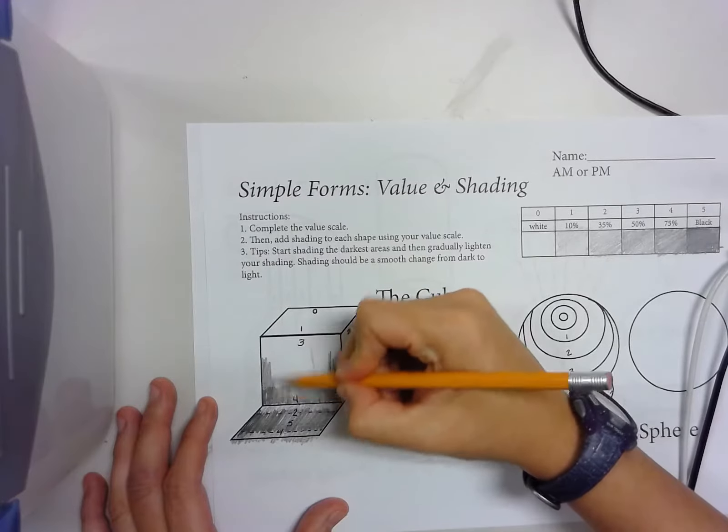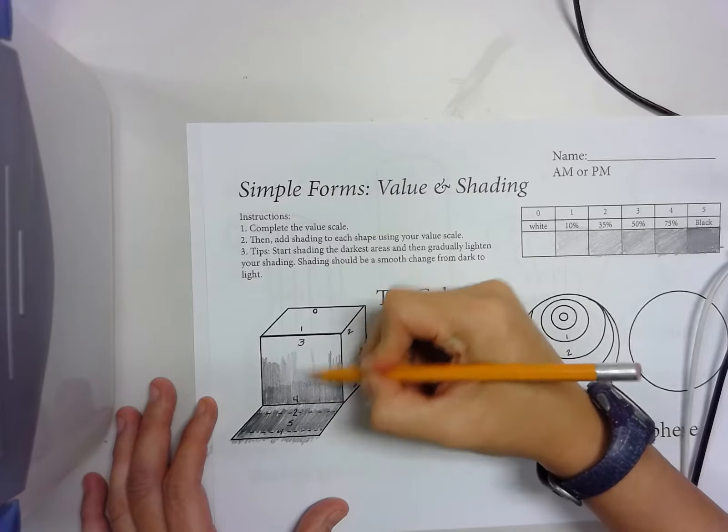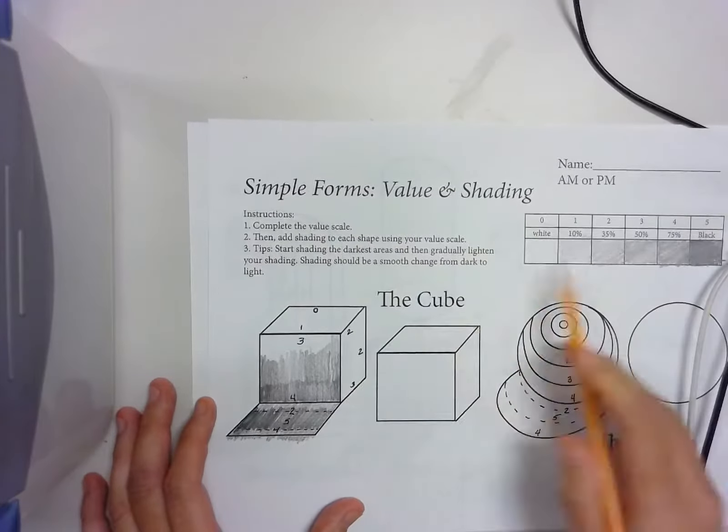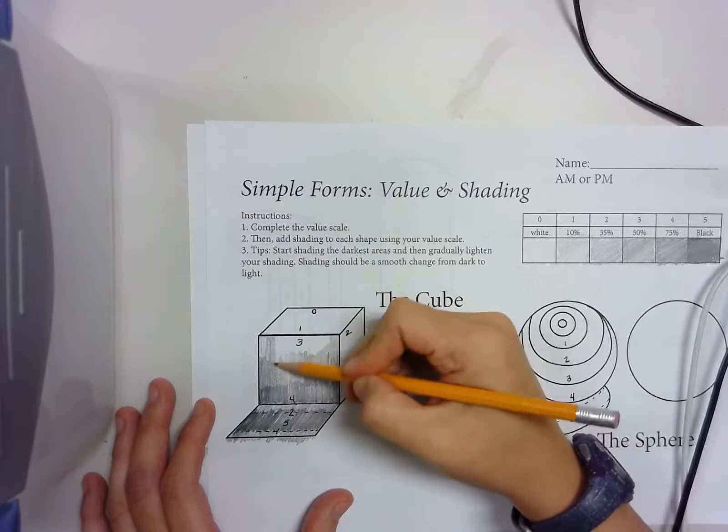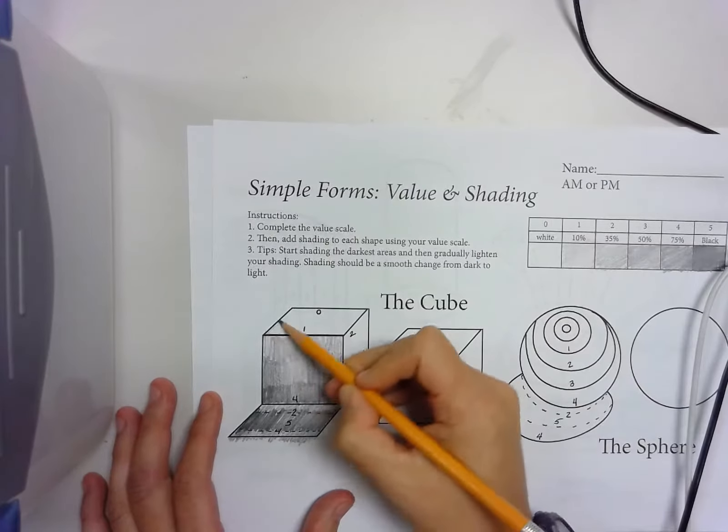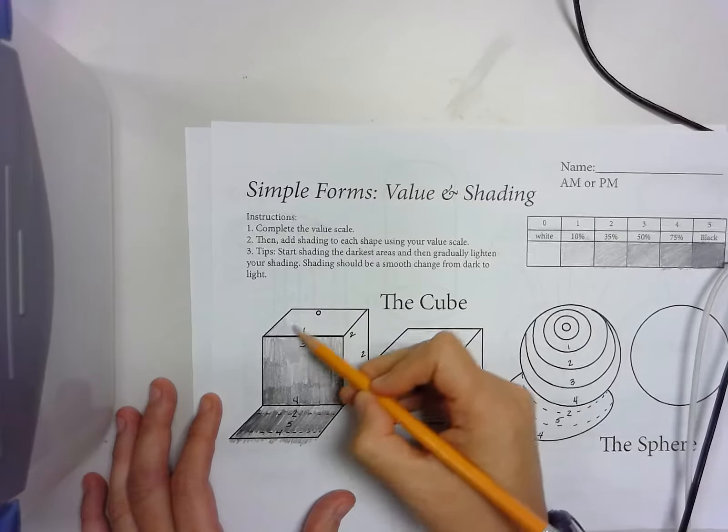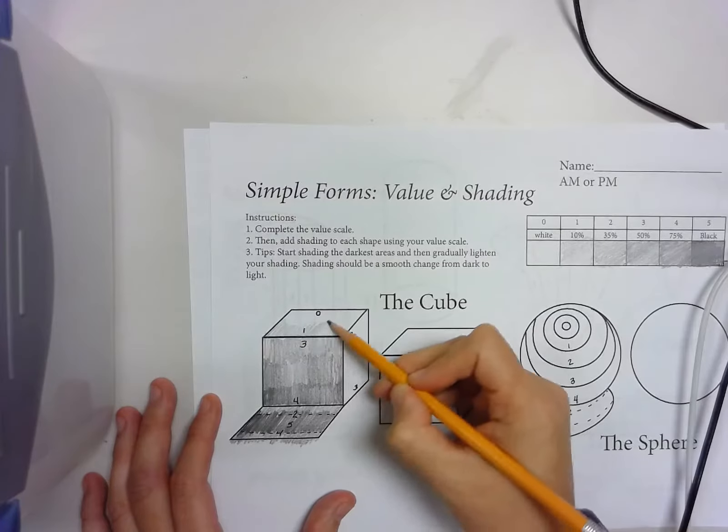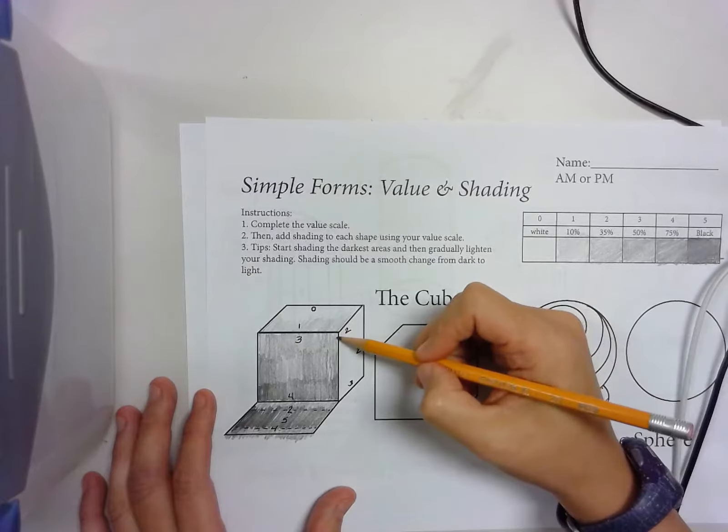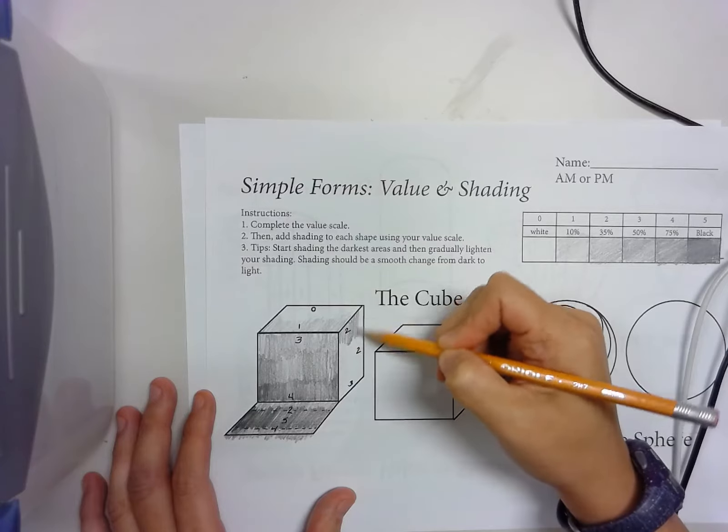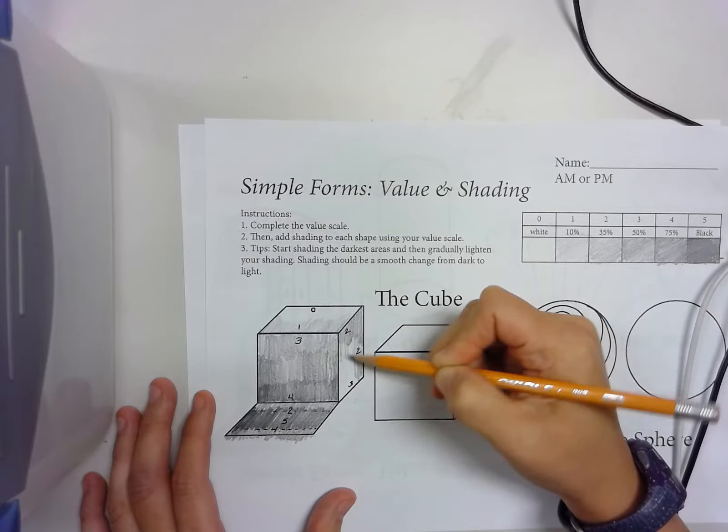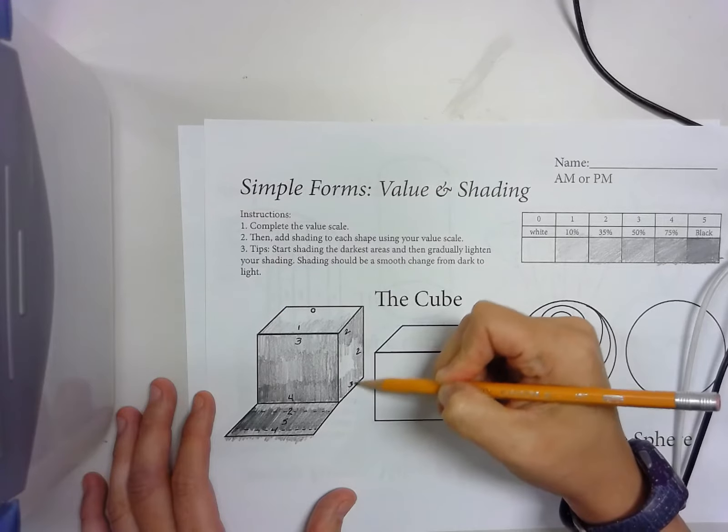Then here, I've got to lighten up because it's 3. I want to look at 3. 3 is 50%, half the pressure. 1 is very light, that's 10% pressure, and it's got to go to white. 2 and 3 right over here. 2 is 35% pressure. And then 3 should be darker, but not as dark as 4.